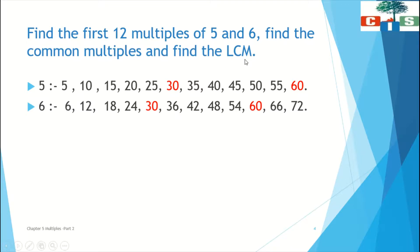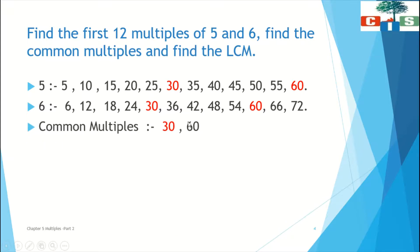Now we have found the first 12 multiples of 5 and 6. We can see that 30 is present in both the multiples of 5 and the multiples of 6, and 60 is also present in both. So the common multiples are 30 and 60. The LCM will be 30 because it is the lowest number in the list of common multiples of 5 and 6. Is it easy, scholars?